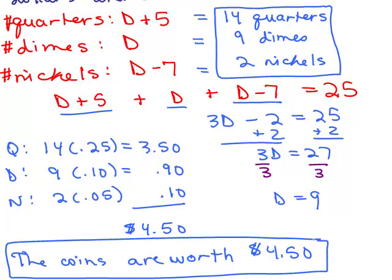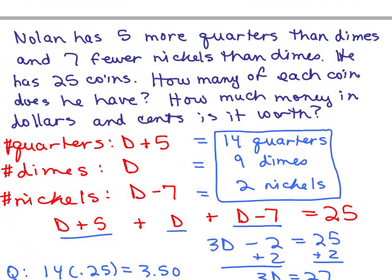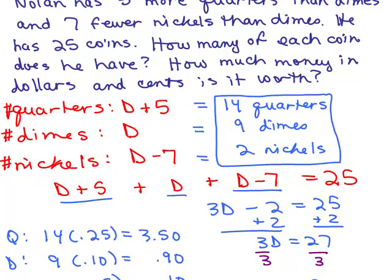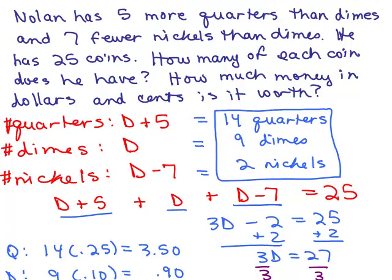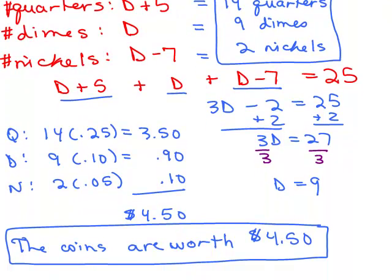Now, what I suggest you do is go back to the original problem, write down the problem, and try doing it all on your own, on a piece of paper, and see if you can get the same answer, and if not, go back to this video and check it out. So here was the original problem, Nolan has 5 more quarters, just write down the problem, then see how you would define your variables, write your equation, solve your equation, answer the question. So we've got 2 answers, 14 quarters, 9 dimes, and 2 nickels was the first part of the problem, and the second part is how much was it worth, the coins are worth $4.50.